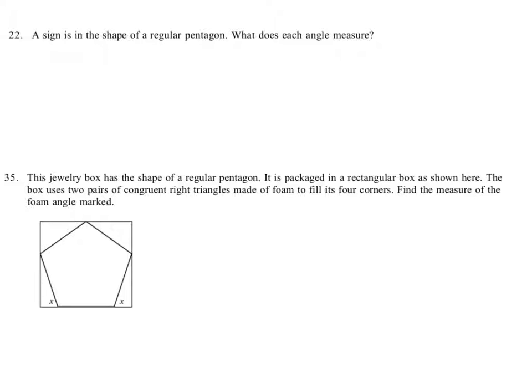Remember, if we want to find each angle in a regular polygon, we use n minus 2 times 180, getting the total number of degrees, and then divide it by the number of sides, n.